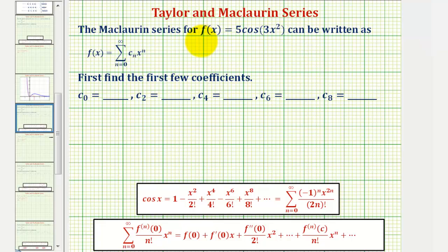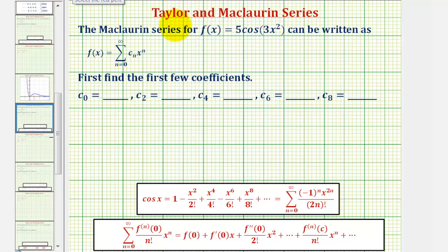We want to find the Maclaurin series for f(x) = 5cos(3x²), which can be written in this form here, and then find the first few coefficients c sub zero, c sub two through c sub eight. Because we're looking for a Maclaurin series, we know the series is centered at c equals zero.